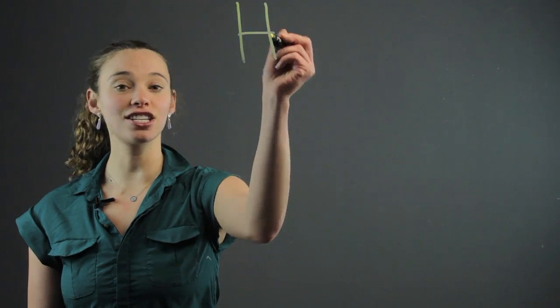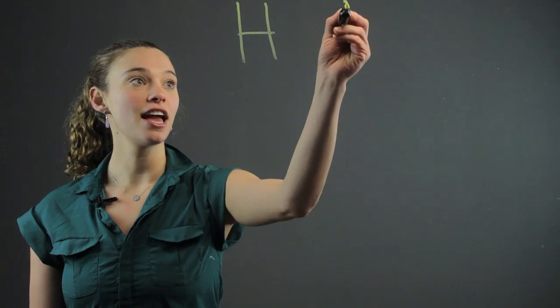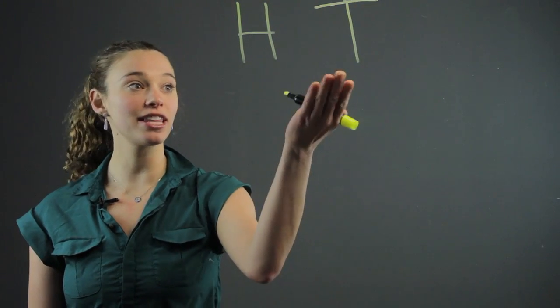When we're addressing a probability problem, we usually like to start with something as basic as flipping a coin. When you flip a coin, you have a 50% chance that it will land on heads and a 50% chance that it will land on tails.